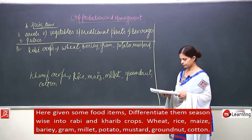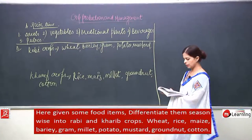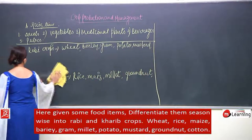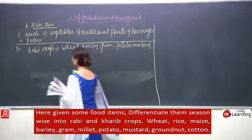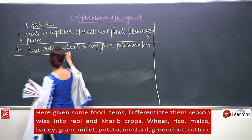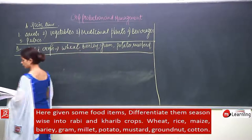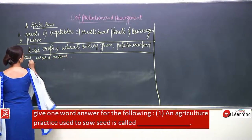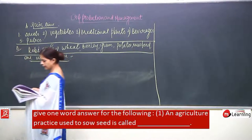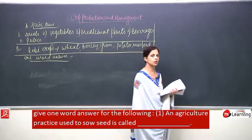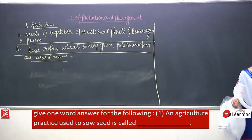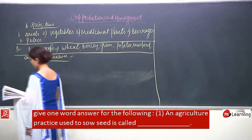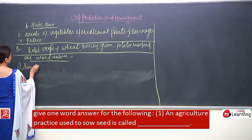Now come to the next section — one-word answers. First: an agriculture practice used to sow seeds is called sowing.